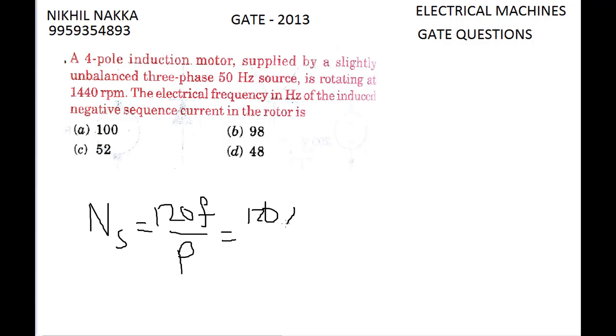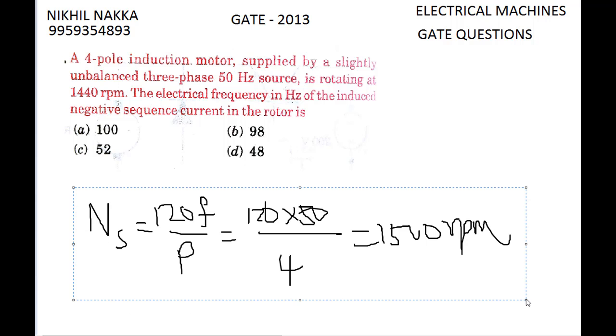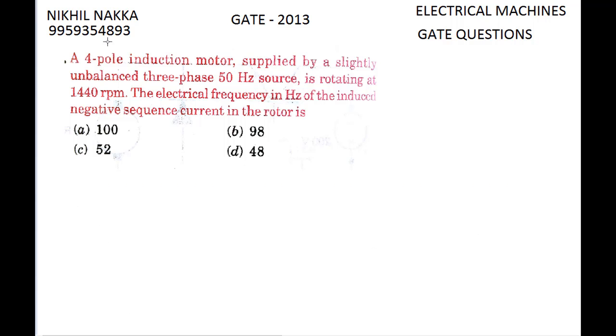120 into 50, and the number of poles are 4, which gives 1500 rpm. 1500 rpm is the synchronous speed of this machine and the rotor speed is 1440 given. So we can find the slip. The slip formula is s equals NS minus NR by NS.